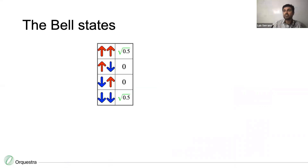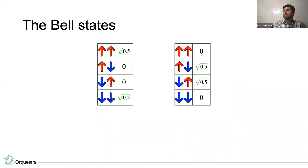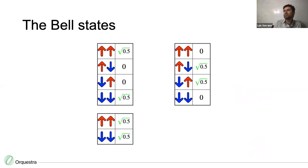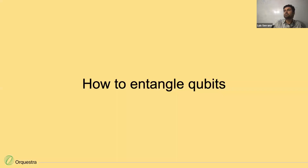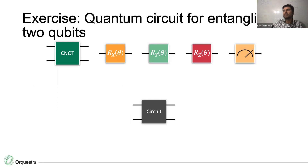The Bell states are the two most entangled two-qubit states. One is where half the time you get up-up and half the time you get down-down. The other is where half the time you get up-down and half the time you get down-up. To create the Bell state, start with two zeros, apply an Ry(pi/2) rotation to the first qubit — giving it a [root(0.5), root(0.5)] wave function — then apply a CNOT gate, and you obtain the entangled Bell state.